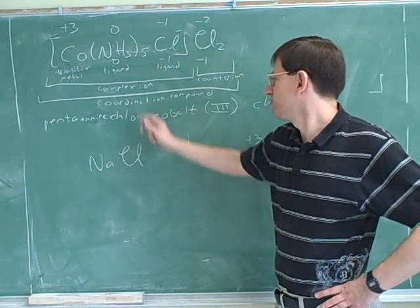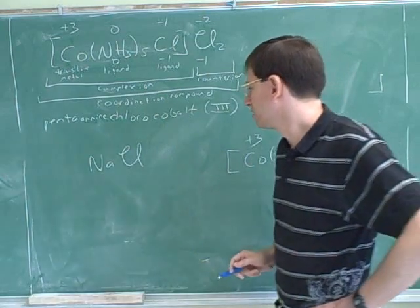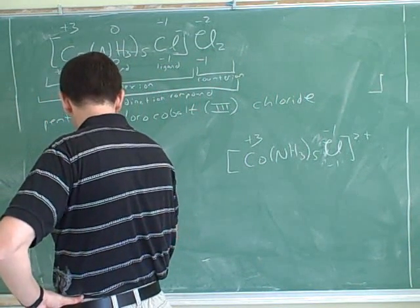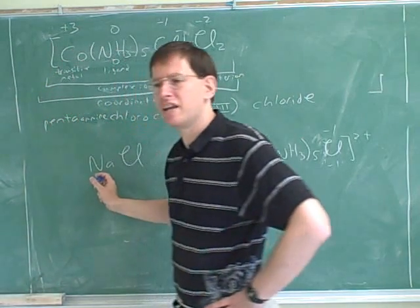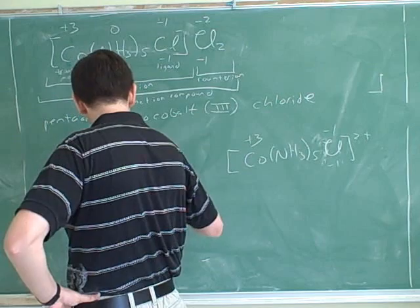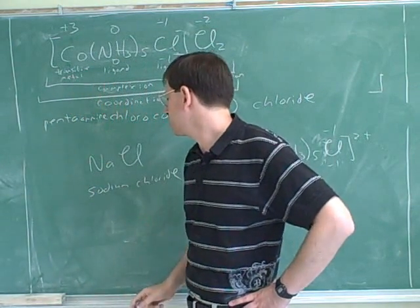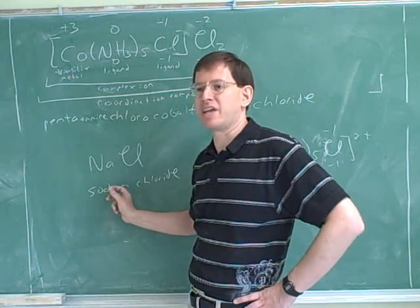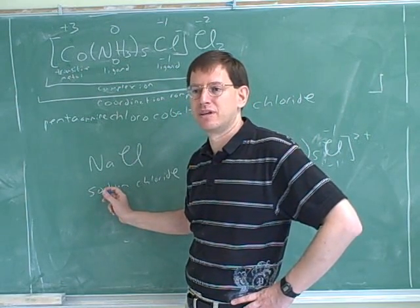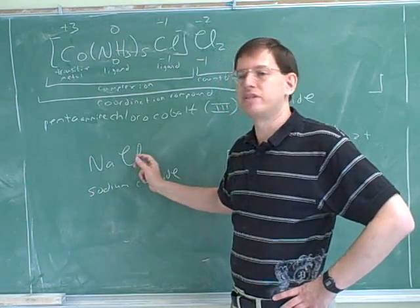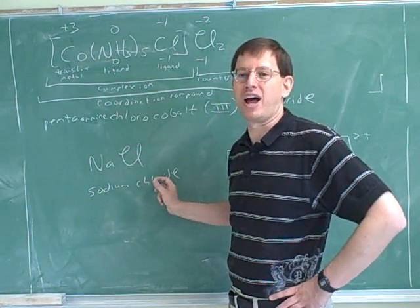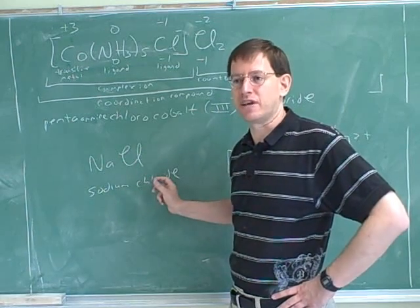Well, cations don't end in -ate. After all, what's the name of this again? Sodium chloride. Notice that the cation here is just named with its name from the periodic table. We don't change this at all. It's a cation, so it's just called sodium. It's only the anion whose name changes. This isn't called sodium chlorine. It's called sodium chloride. It's the anion that gets different suffixes.